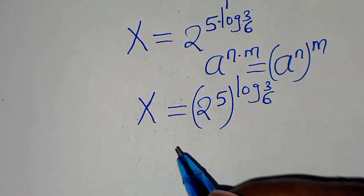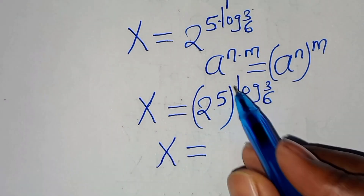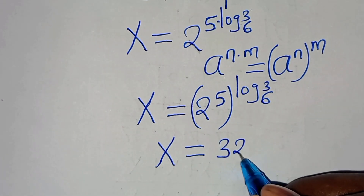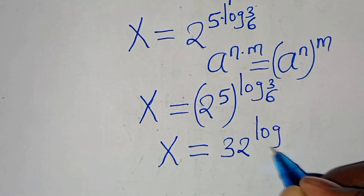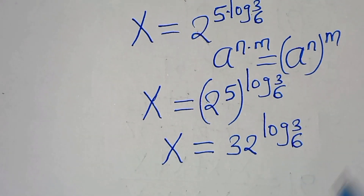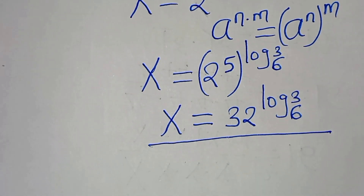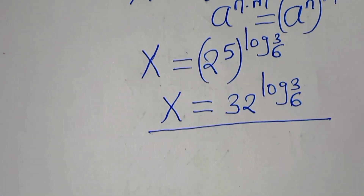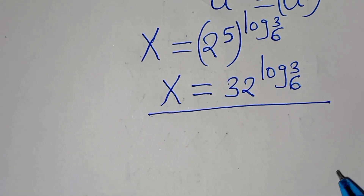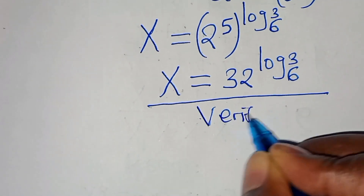So the value of x is 32 raised to the power of log base 6 of 3. The next step is to verify that this value of x actually satisfies the original equation.